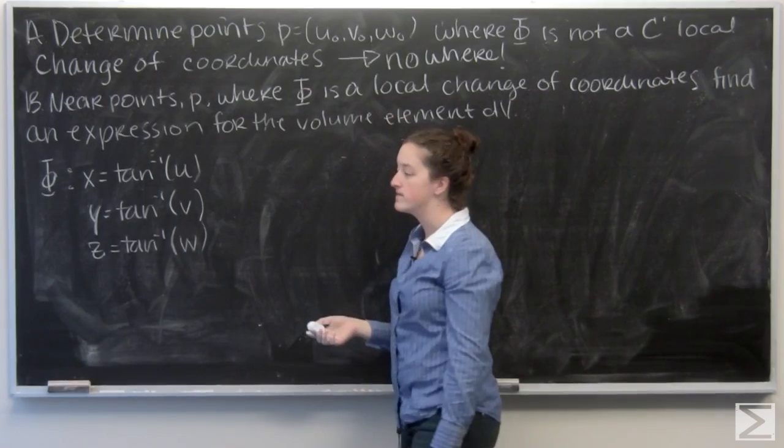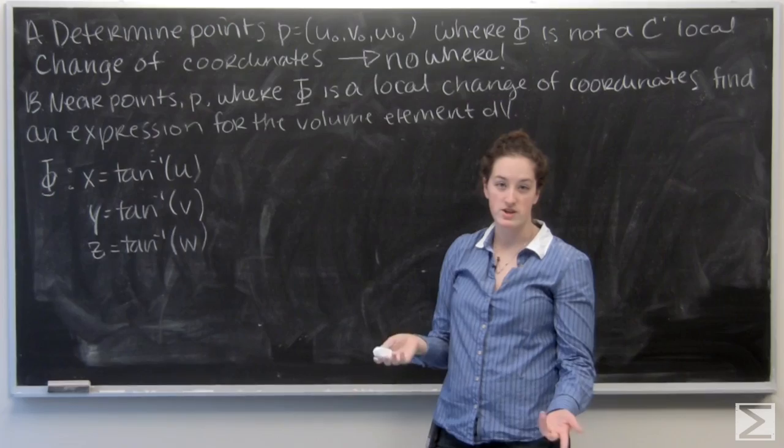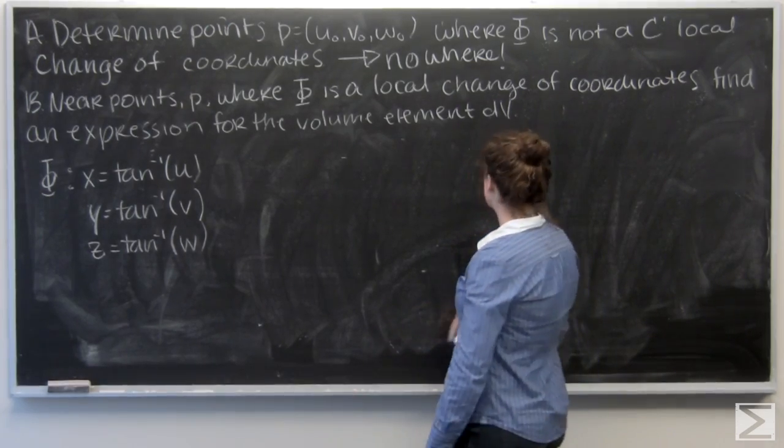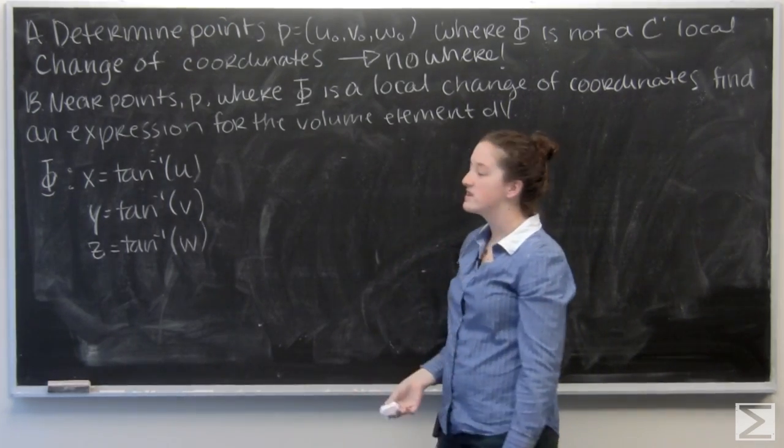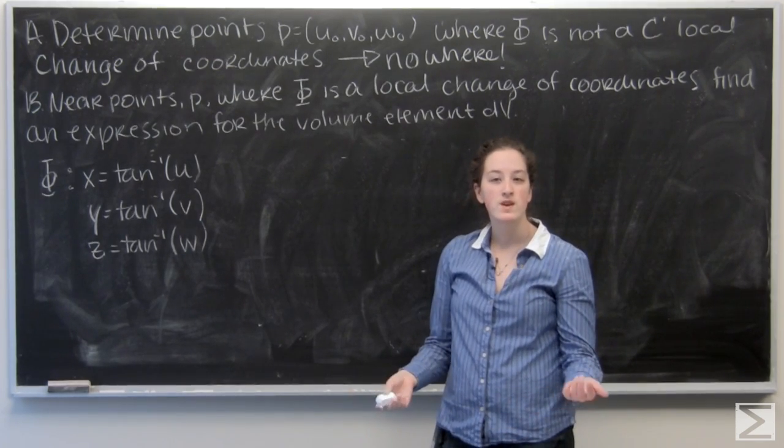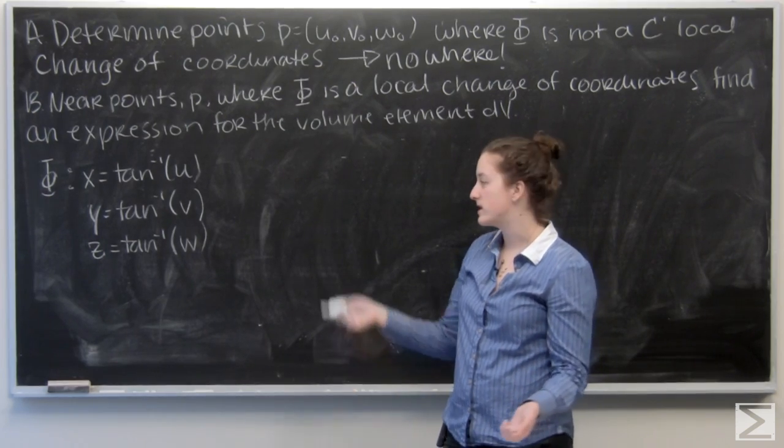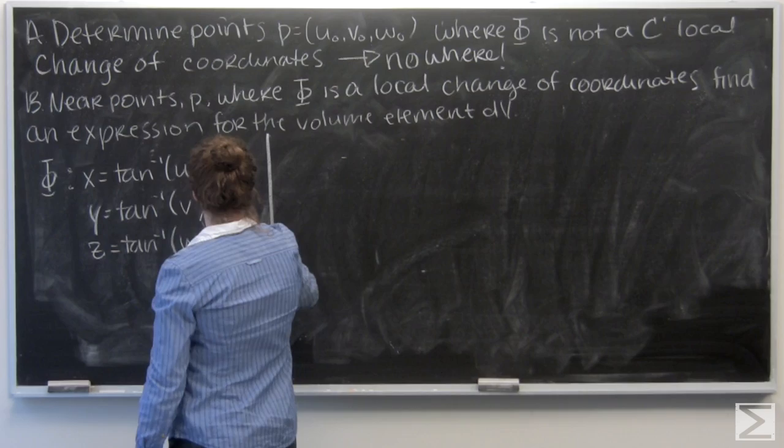So now let's look at b. So for points where it is a local coordinate change, everywhere, as we just decided, we want to find an expression for the volume element, dv. So remember, to find this, we want to take the absolute value of the determinant of this matrix.